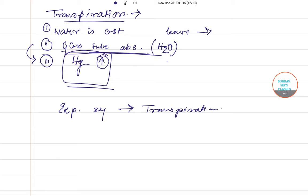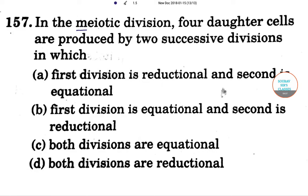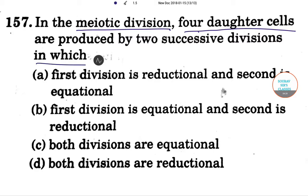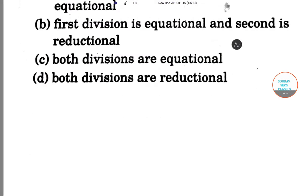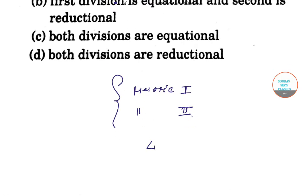In the next question we have a question on meiotic division. In meiotic division, four daughter cells are produced by two successive divisions. Meiotic division has two steps: meiotic division one and meiotic division two, and together these produce four daughter cells.